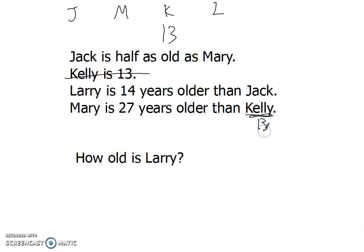Kelly is really 13. Mary is 27 years older than Kelly. So that would be 13 plus 27, which gets us 40 for Mary. Now we're looking for one that has Mary at the end. There it is. Jack is half as old as Mary, so half of 40. Half of 40 is 20. That would be Jack.